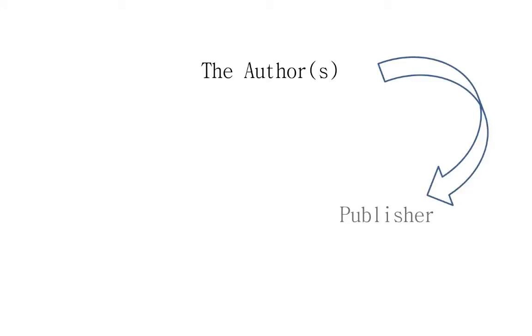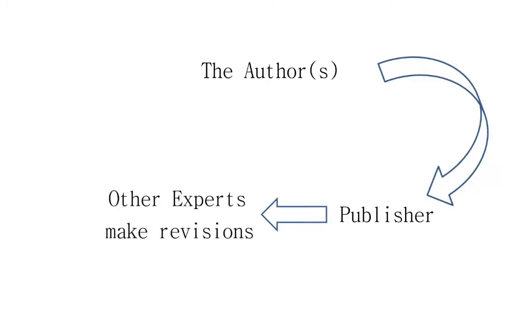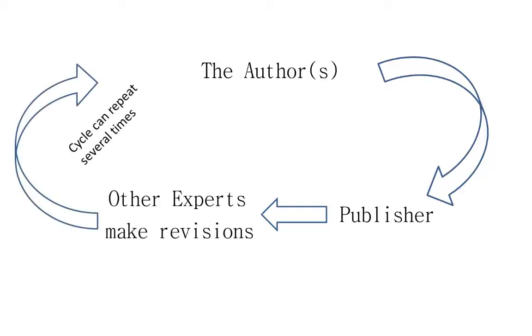Part of the publication process scholarly sources go through is a process called peer review. Peer review is when an author submits an article to a journal, and then other experts will review it, and then send it back to the author with suggested revisions. This can be repeated many times before an article is approved to be published. It may take many months and sometimes years before an article becomes published.